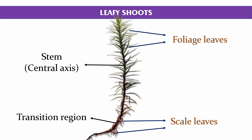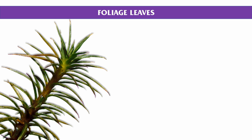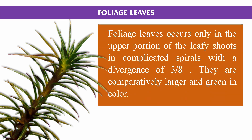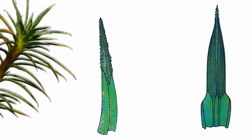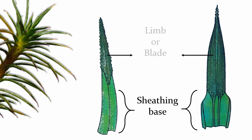Both types of leaves are spirally arranged on the stem or central axis. Foliage leaves occur in the upper portion of the leafy shoots in complicated spirals with a divergence of 3/8 — that means in three complete spirals there are eight foliage leaves. They are comparatively larger and green in color. Each foliage leaf can be differentiated into a proximal sheathing base and a distal narrow limb or blade. Proximal means the part of the leaf nearer to the stem, and distal means the portion farther from the stem.